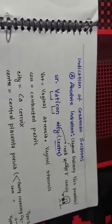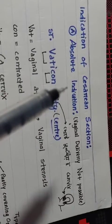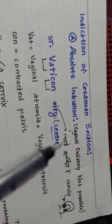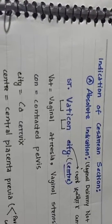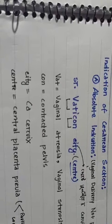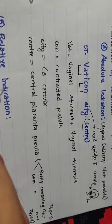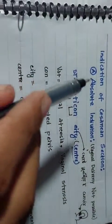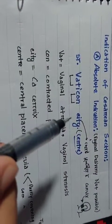What are the absolute indications? Absolute indication means vaginal delivery is not possible, but we must do caesarean section — even with a dead fetus, we have to do caesarean section for these indications. To remember the absolute indications, we use the mnemonic 'Vatican City'.